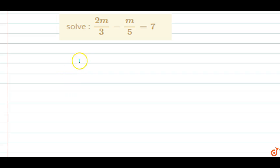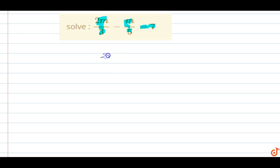In this question, solve 2m by 3 minus m by 5 equals 7 and find the value of m. So 2m by 3 minus m by 5 equals 7, and we are going to solve for m.